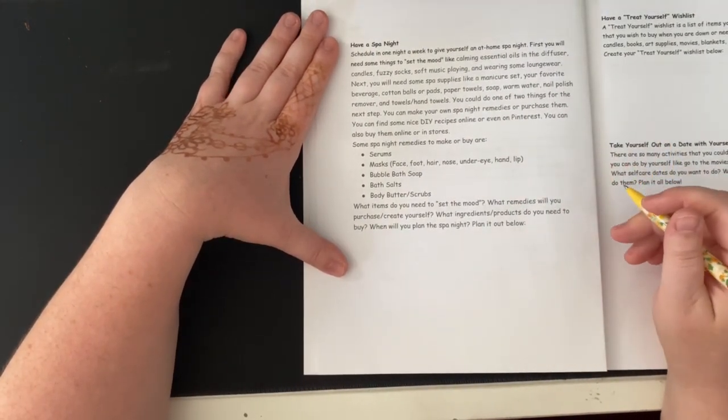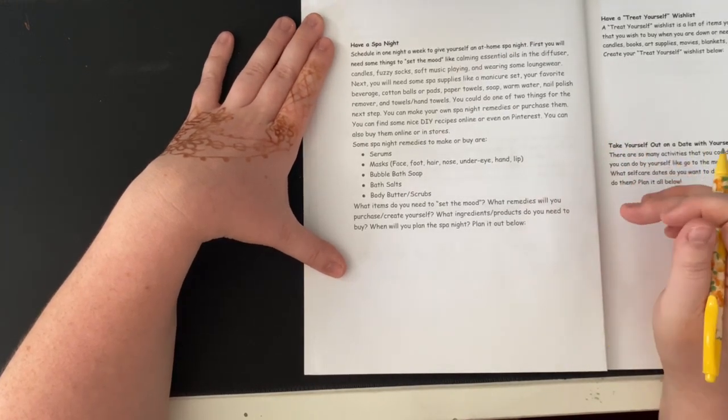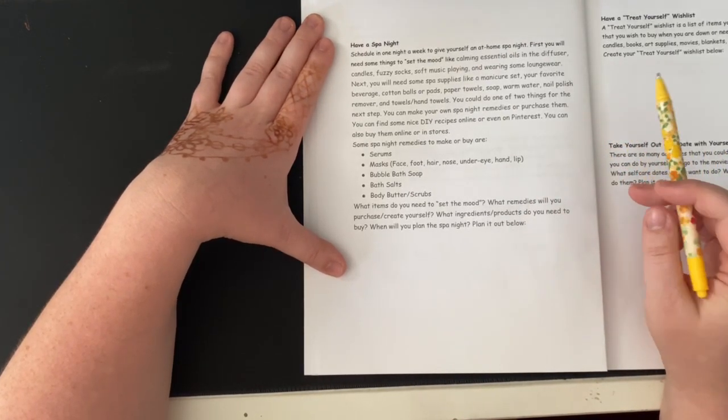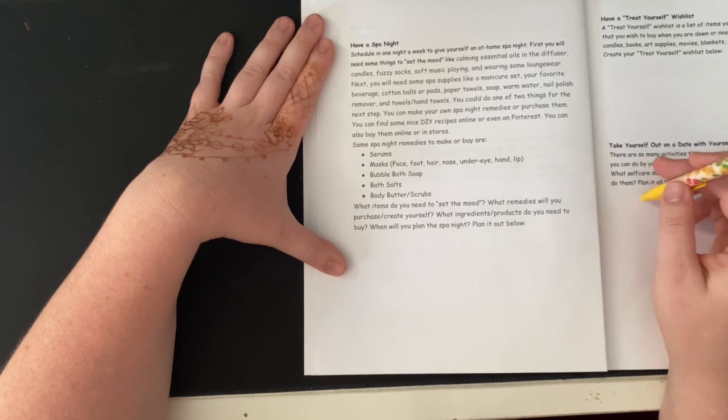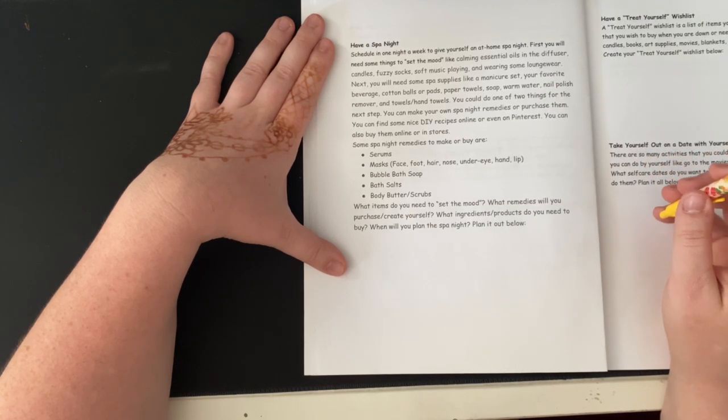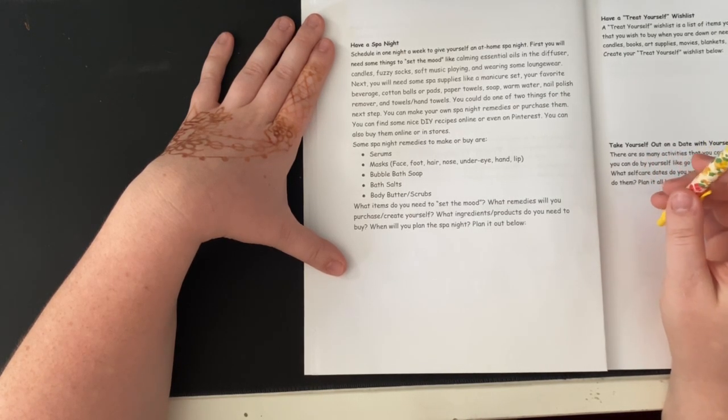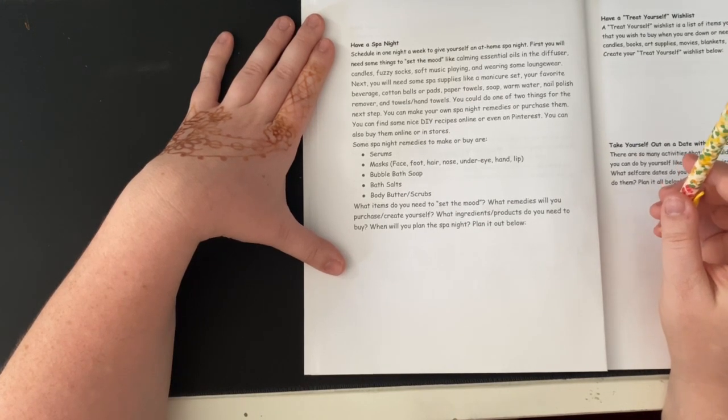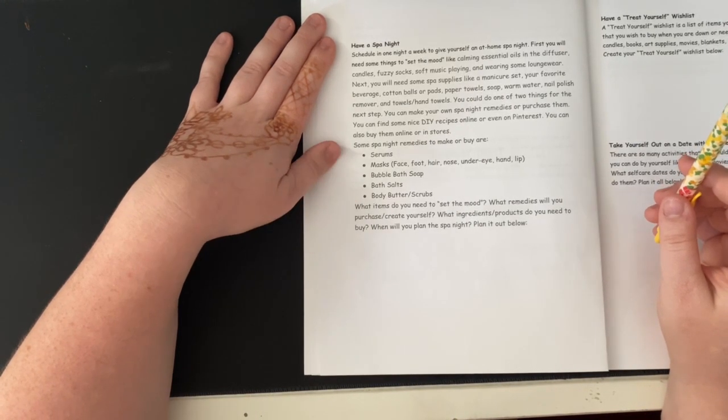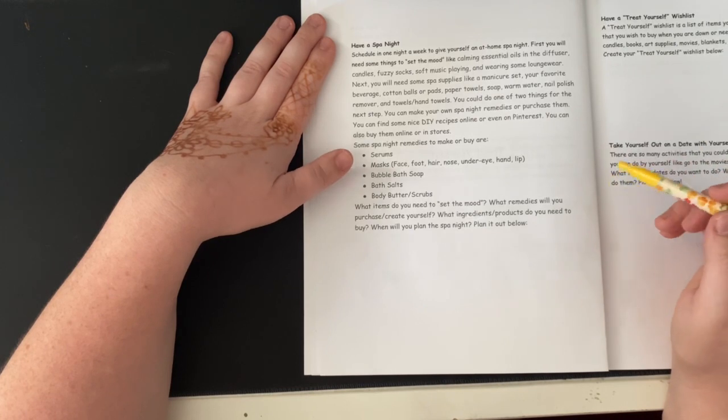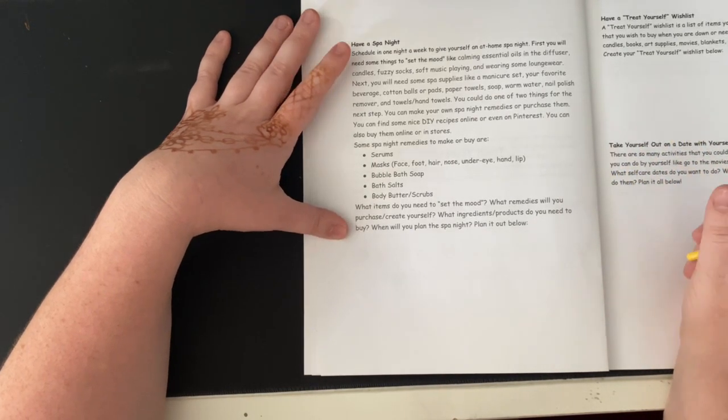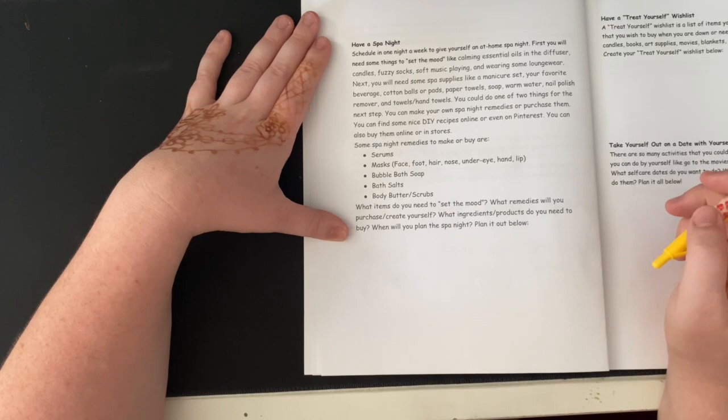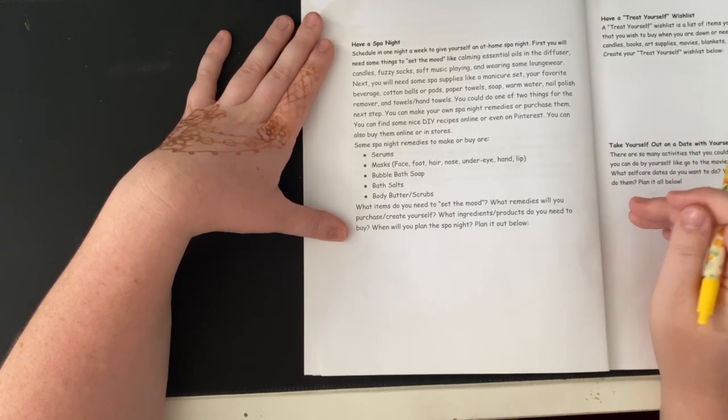You could do one of two things for the next step. You can make your own spa night remedies or purchase them. You could find some nice DIY recipes online or even on Pinterest. You could also buy them online or in stores. Some spa night remedies to make or buy are serums, masks—face, foot, hair, nose, under eye, hand, lip masks—bubble bath soap, bath salts, body butter, and scrubs.